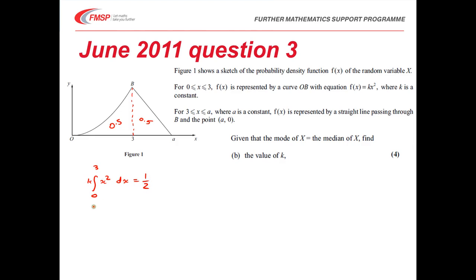If I carry out this integration, this gives me kx³/3 evaluated between 0 and 3, which must equal 1/2. Substituting 3 in gives me 9k = 1/2. So k must equal 1/18.